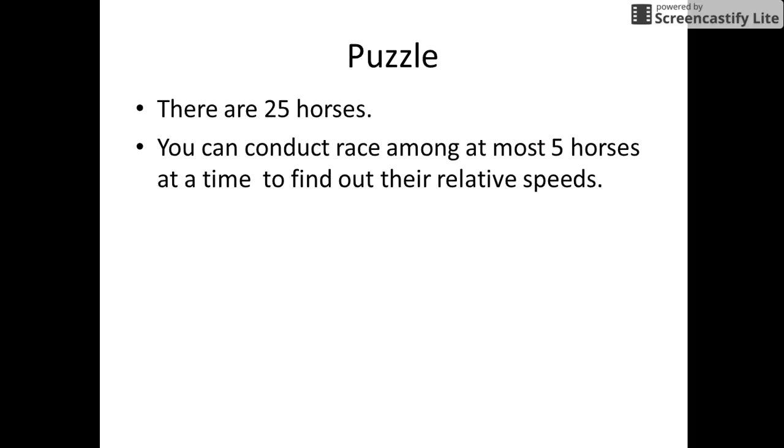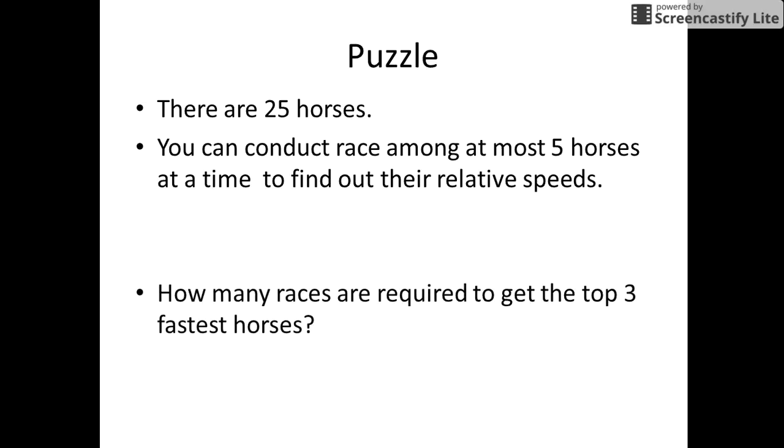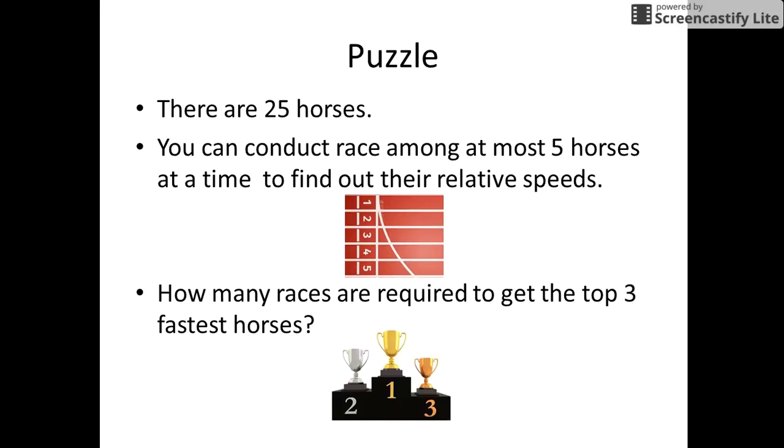In this puzzle, there are 25 horses. You can conduct a race among at most five horses at a time. How many races are required to get the top three fastest horses? The task is to find the minimum number of races that you would conduct to find the top three positions.